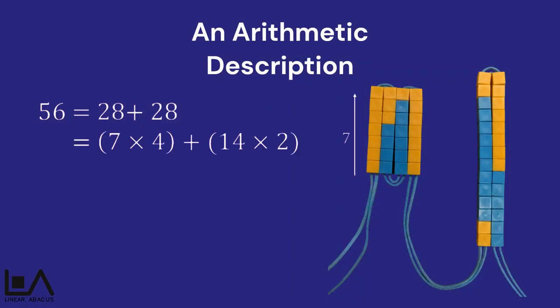The arithmetic shows what's been modelled on the beads. Here, we can see two different arrays, a 7 by 4 array and a 14 by 2 array, both of which represent a total of 28. When we combine them, we still get to the 56th bead.